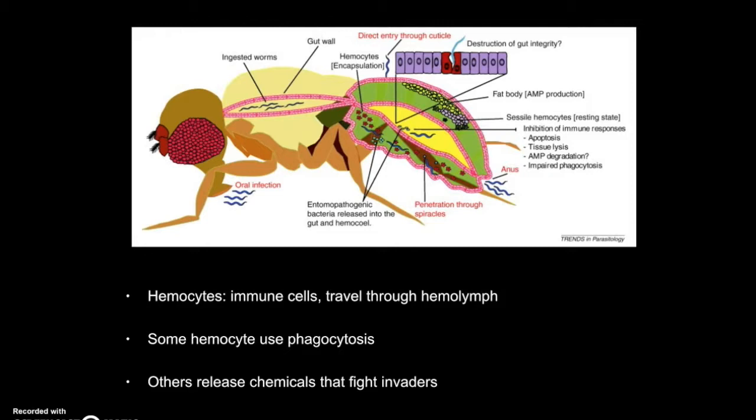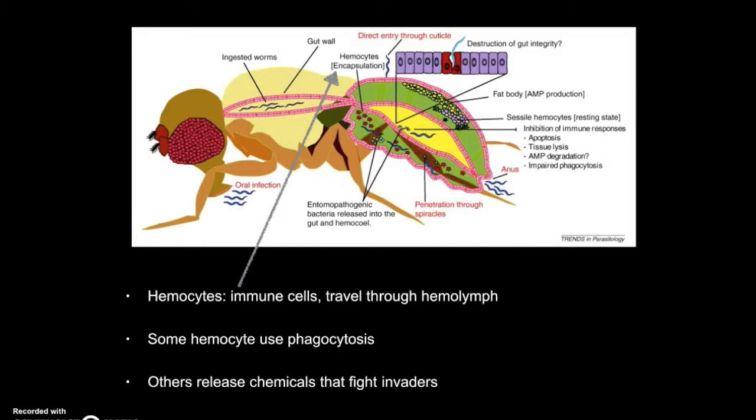Among these are hemocytes. Hemocytes are immunity cells that travel through insects' bodies in hemolymph. Some hemocytes break down foreign bodies using phagocytosis. Phagocytosis is when a cell engulfs a particle and breaks it down. Other hemocytes release chemicals that kill pathogens and trap large invaders. Insect immune systems use recognition proteins to identify invaders and trigger these responses.